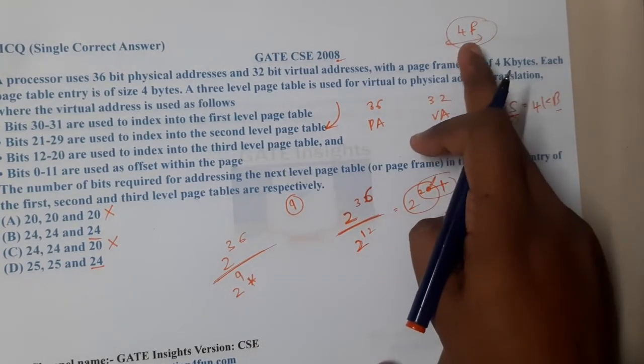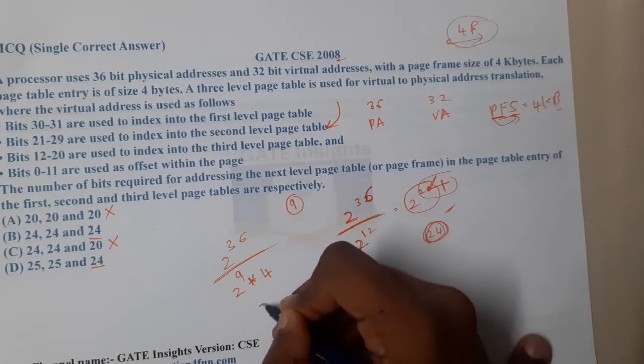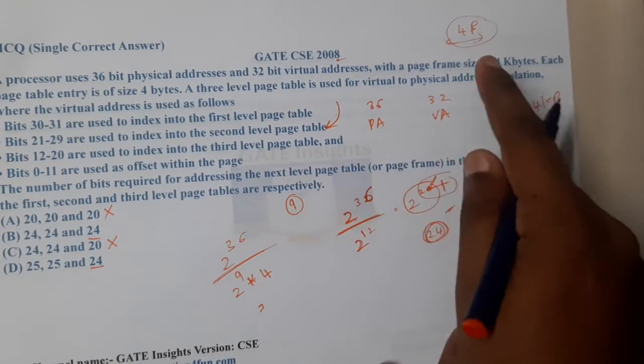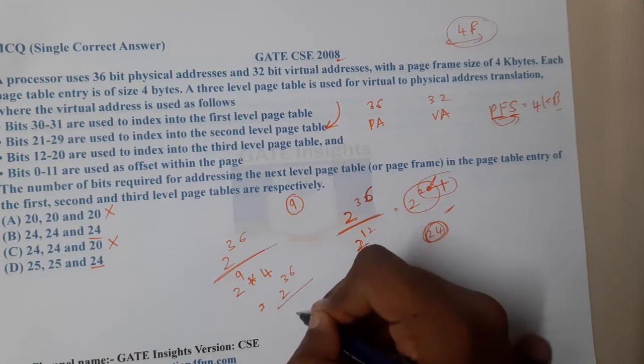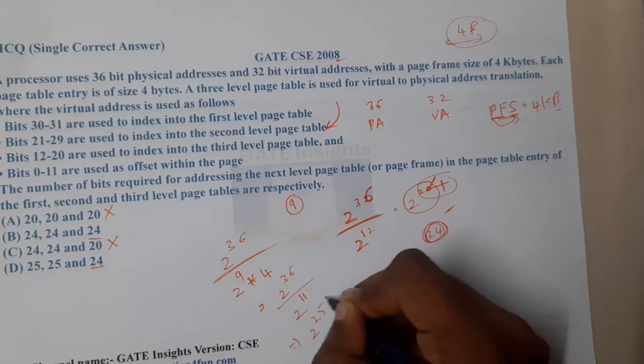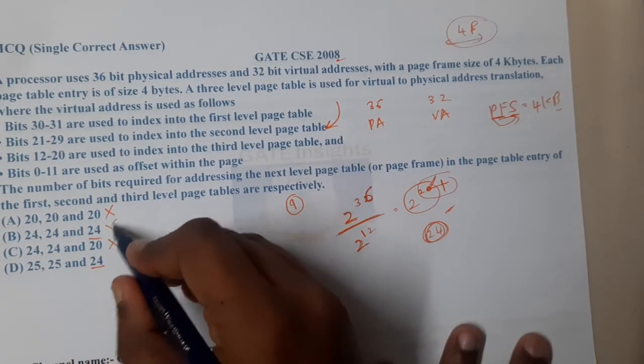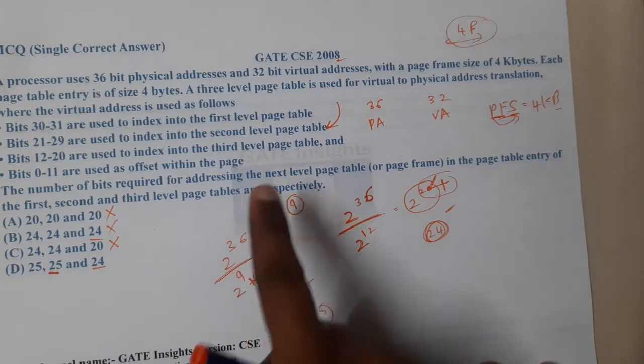So it is 2 power 9 into the number of bits, which is nothing but 4 bytes because each of that entry is that much size. So it is nothing but 2 power 36 divided by 2 power 11, so that is nothing but 2 power 25. So now the answer is 25, this will be the answer.